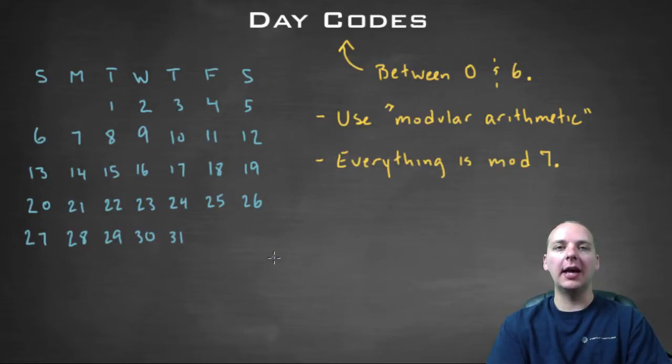The first detail we're going to look at is something called day codes. When you have all the days of a month, every day is going to be associated with a certain day code. The day code for one is the number one, the day code for two is two, three is three, four is four, five is five, six is six.